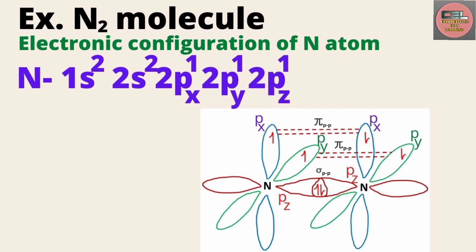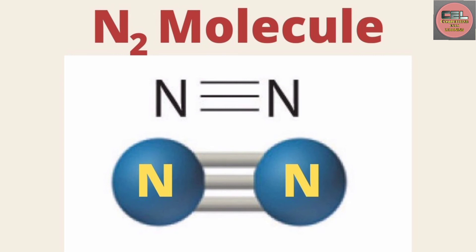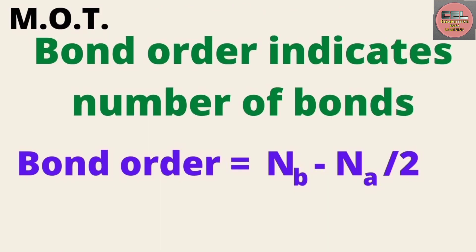And when the 2py orbital of one nitrogen atom comes close to the 2py orbital of another atom with electrons of opposite spin, another pi bond forms. So in the case of the nitrogen molecule, 2 pi bonds and 1 sigma bond form — that is why it has a triple bond. This concept is also explained by molecular orbital theory.